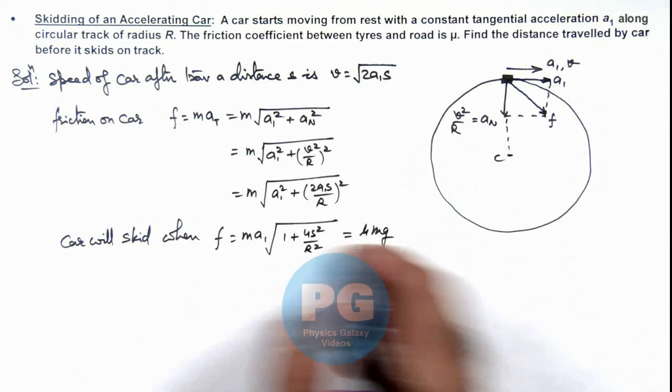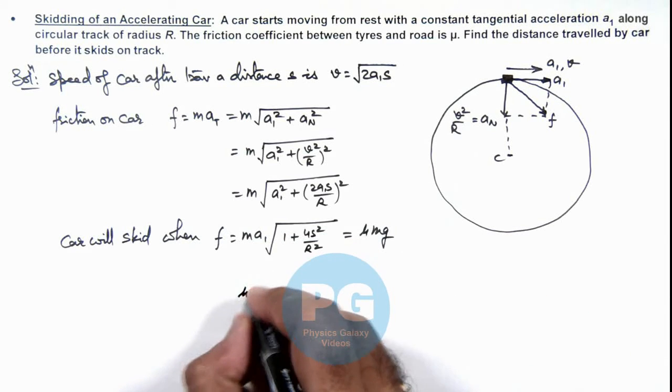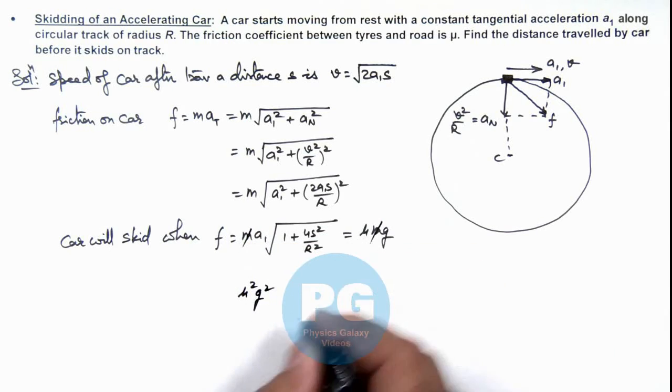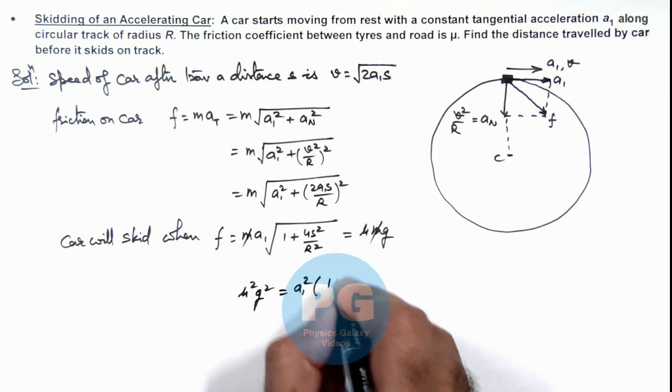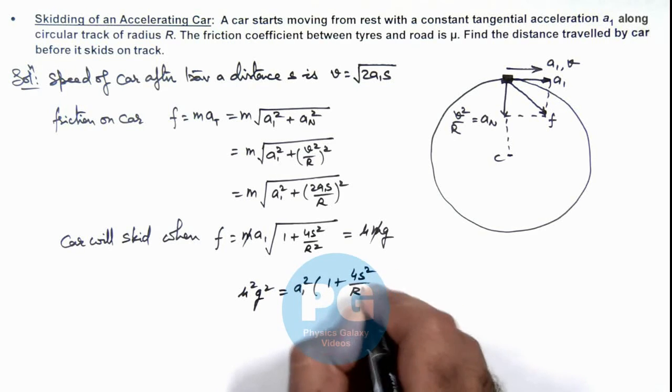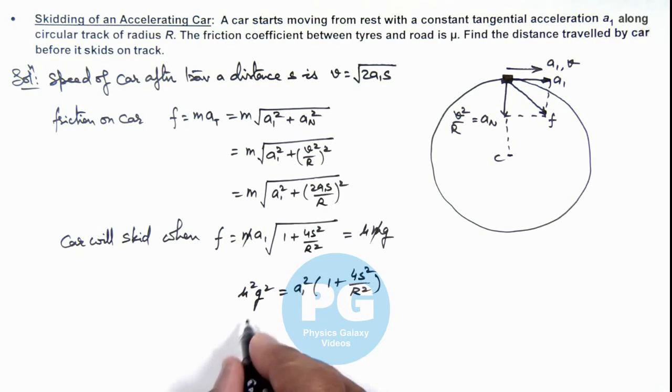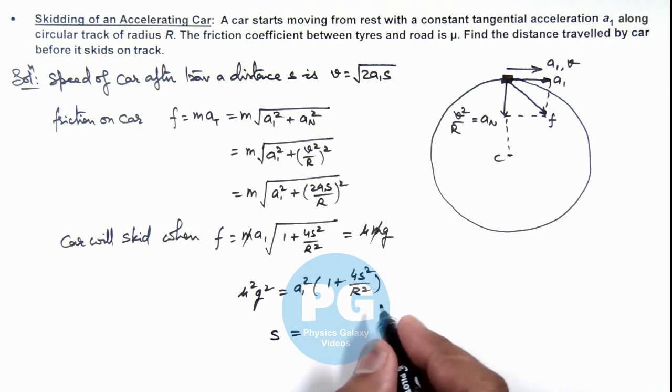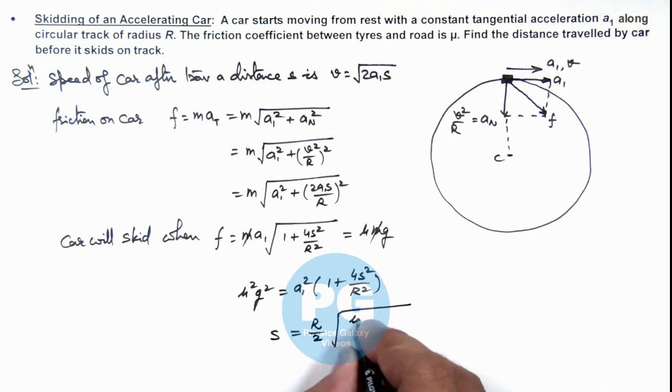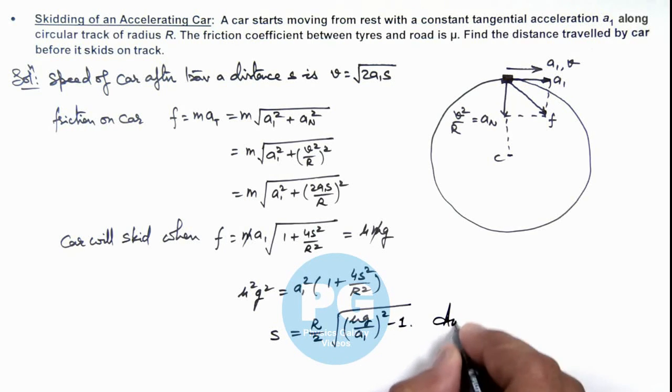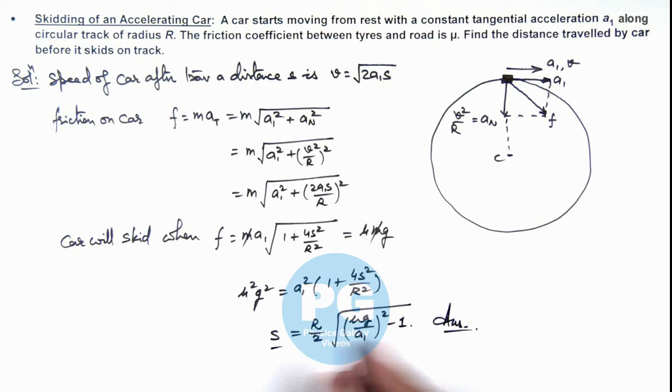So on simplifying, if we square it this will give us μ²g², as here m gets cancelled out. μ²g² is equal to a_t²(1 + 4s²/R²). Further simplifying this will give us the value of s as, I am just leaving it for you to simplify the equation and get the value of s which is (R/2)√((μg/a_t)² - 1), which is the final result of the problem, the distance traveled by car before it starts skidding.